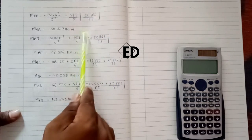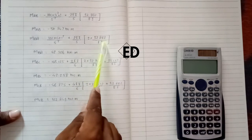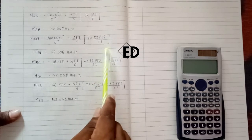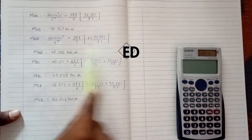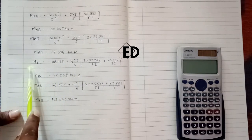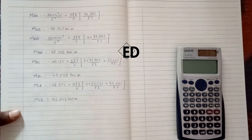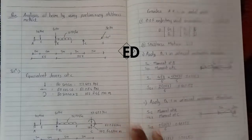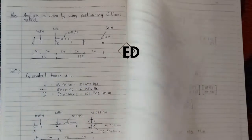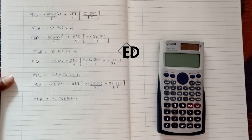Using the slope deflection method with 2EI/L(2θ_B + θ_C), where θ_B = 32.882/EI and θ_C = 25.537/EI, the moment M_BC = −42.25 kNm and M_CB = 102.846 kNm. Once all end moments are known, it is straightforward to calculate the support reactions at B and C. This completes the analysis of the beam using the preliminary stiffness method.